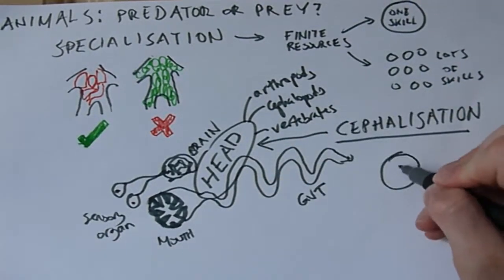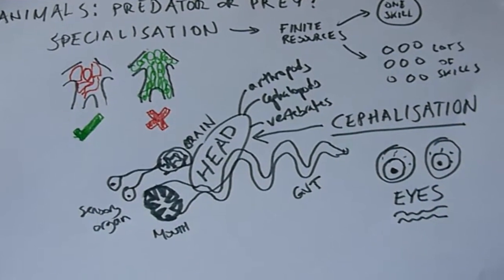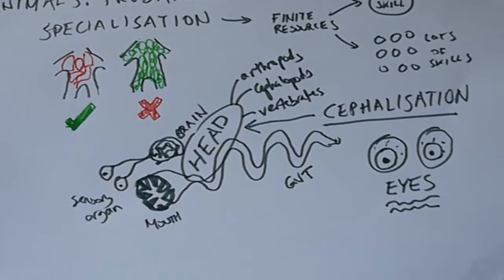Look very closely at the head. There will almost certainly be a set of eyes which have evolved independently over 40 times on Earth. Eyes are really bloody useful.